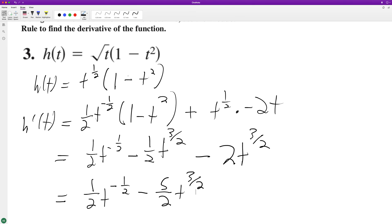And we can just leave it like that. If you want to go crazy, we can do like 1 over 2 square root of t minus 5 half times square root of t cubed.